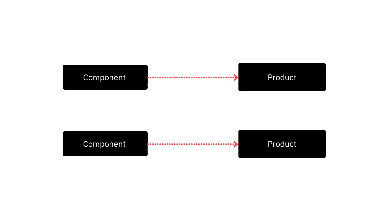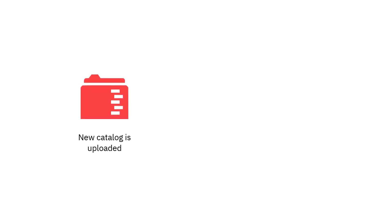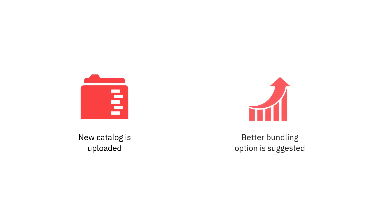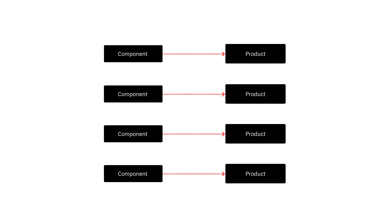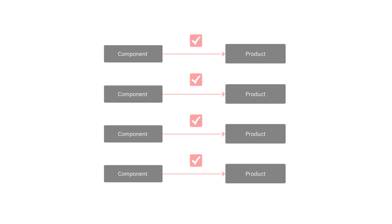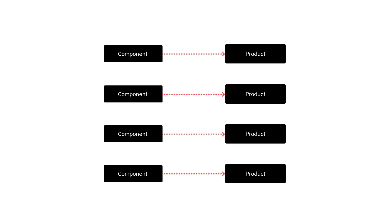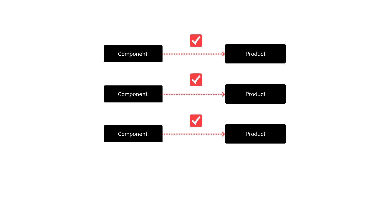Confirming the assignments. When the assignment of a component to a product is correct, you can confirm it. The task is optional. However, components whose assignment is not confirmed can be automatically reassigned to different products. This might happen when a new software catalog is uploaded during an upgrade of the License Metric Tool server, or when a different product is suggested as the best bundling option based on new automated bundling results. To avoid such a situation, it is recommended to confirm the assignment of all components. Confirming assignments can also be used as an indication of which software items were already reviewed and which still need verification.